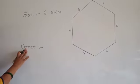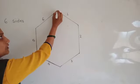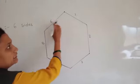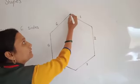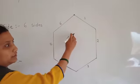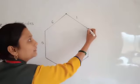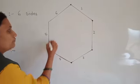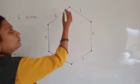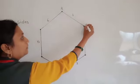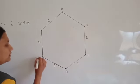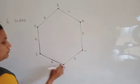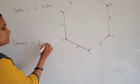Now, corner. Corner means the point where two sides meet. Corner is the point where two sides are made. Side six and side one meet here, so this is one point. Edges one and two meet here, so this is also one point. Like this, these are the points of this figure, and I am going to label them with alphabets: A, B, C, D, E, and F. How many corners are there? One, two, three, four, five, six — there are six corners.